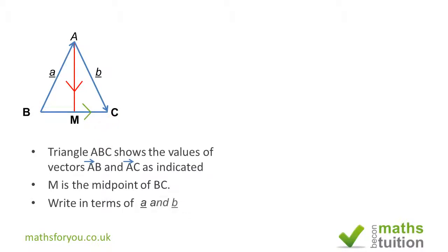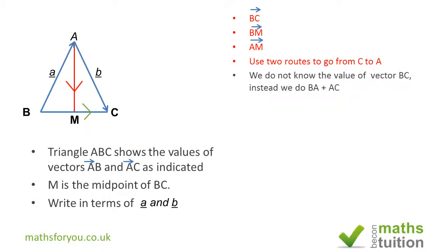We want to write in terms of a and b the following vectors: BC, BM, AM, and then we're asked to find two routes to go from C to A to check our results. Now for the first one, BC, there's no direct connection because we don't know the value of BC, so we have to go from B to A and then from A to C. In effect, we're going to do a plus b, so BC is now a plus b.